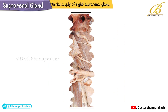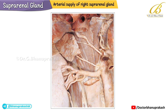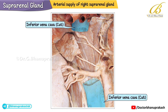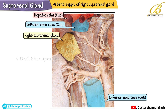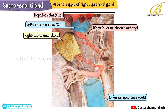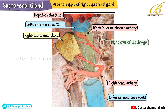This illustration shows the arterial supply of the right suprarenal gland. Superior to the gland, the cut ends of the inferior vena cava and the hepatic veins can be seen. The right suprarenal gland receives its blood supply from multiple sources: one artery arising from the right inferior phrenic artery, and another from the right renal artery. Posterior to the right inferior phrenic artery, the right crus of the diaphragm is visible.